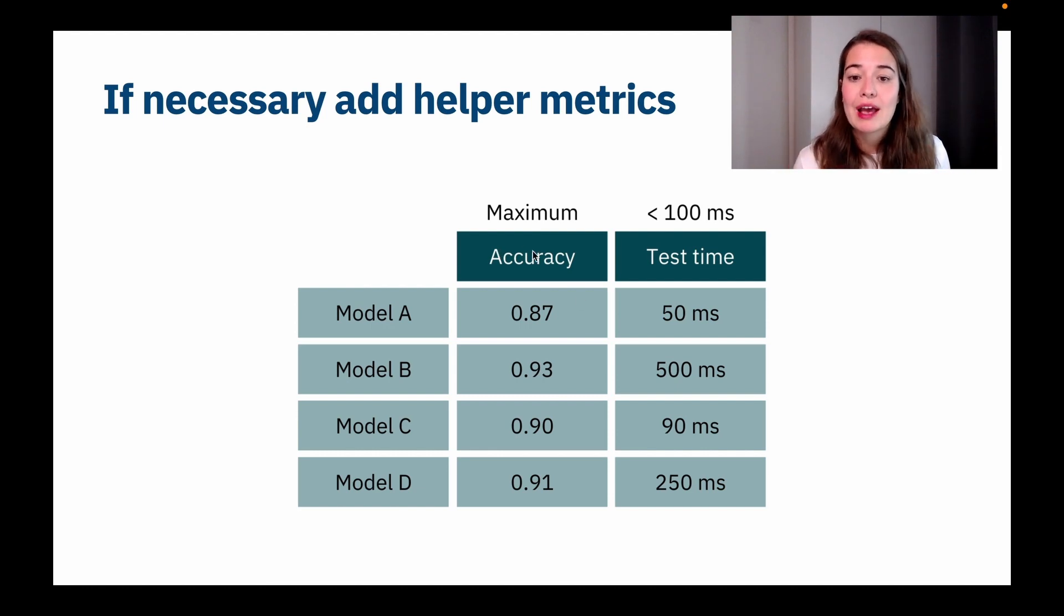I'm going to try to find the model that has the maximum accuracy. But at the same time, the testing time, the amount of time it takes the model to predict something needs to be lower than 100 milliseconds. So then what you can do is to get all of these metrics in front of you and basically say anything that takes more than 100 milliseconds, I'm not even going to consider those. And then I'm going to take the maximum accuracy or the model with the maximum accuracy that also has a test time that is lower than 100 milliseconds.